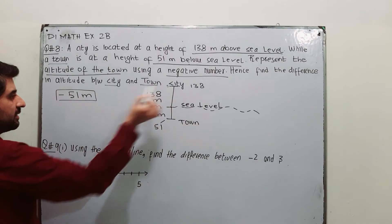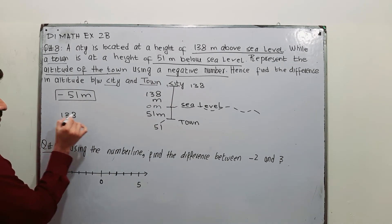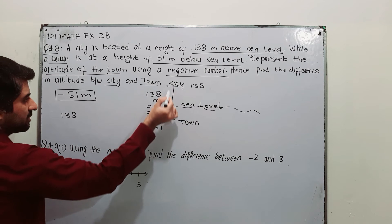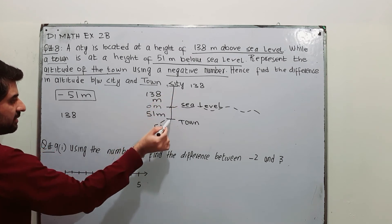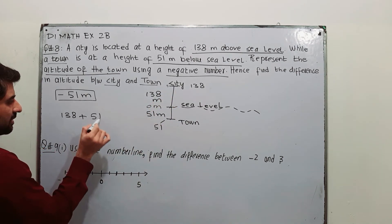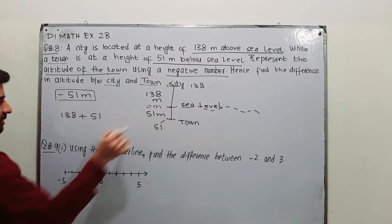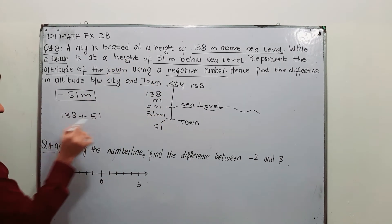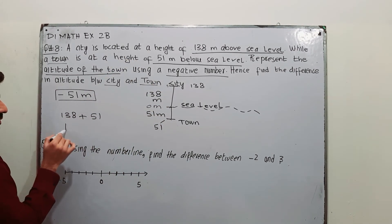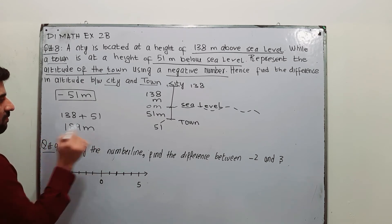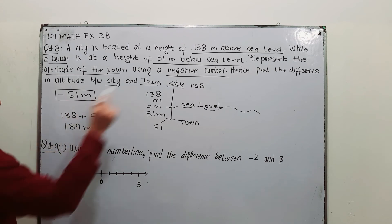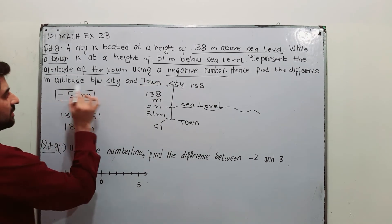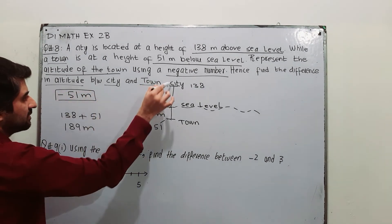So from here till here it is 138 and from here till here it is 51. So the difference between the distance is 138 plus 51, which is equal to 189 meters. That is the answer for the difference in altitude between city and town.